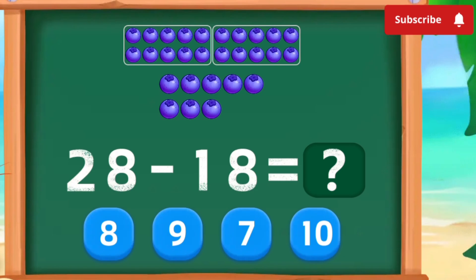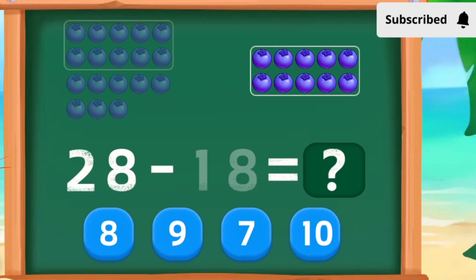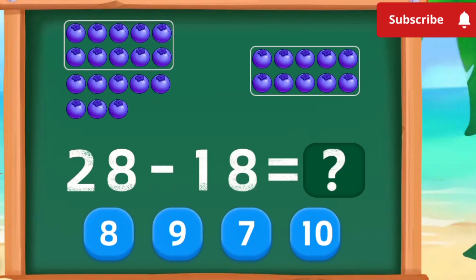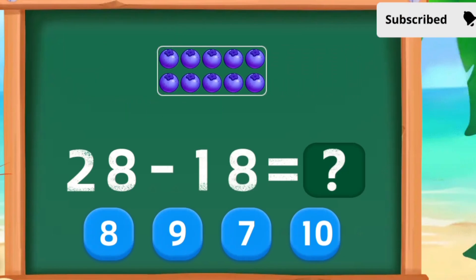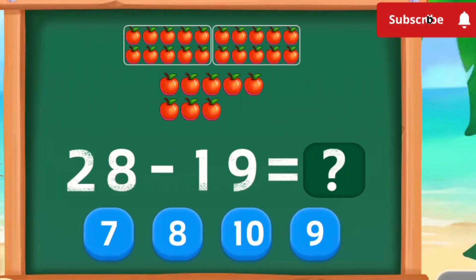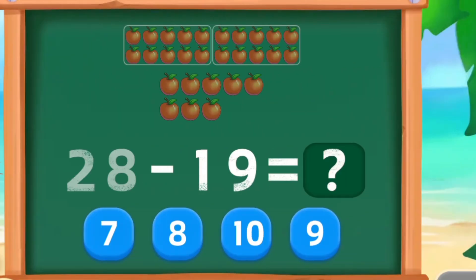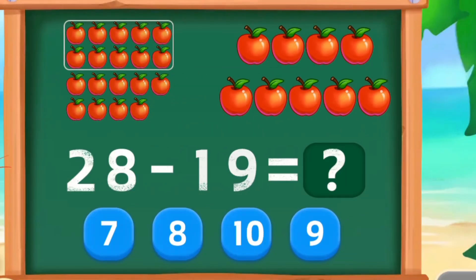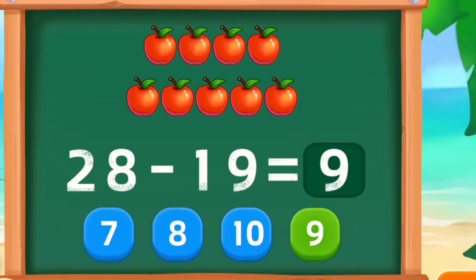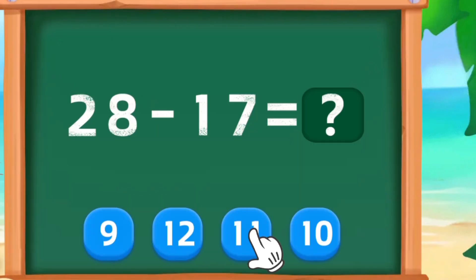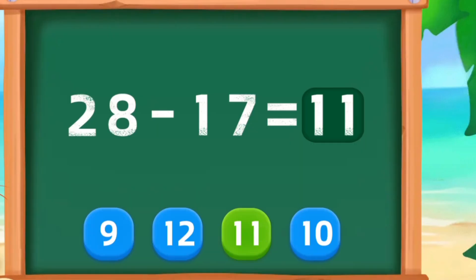28 minus 18 is 10. Perfect. 28 minus 19 is 9. Nice. Select the correct number. Wonderful. Okay. Yeah. Bye-bye. I'll see you next time.